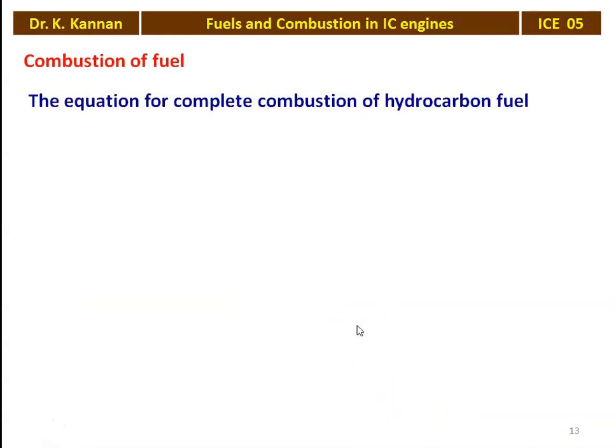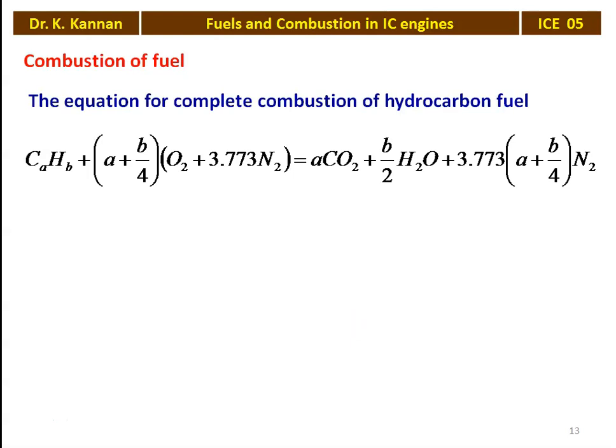The higher calorific value equals the lower calorific value plus the mass of water vapor per kg of fuel multiplied by the latent heat of evaporation at the given pressure and temperature of combustion. The equation for complete combustion of any hydrocarbon fuel CₐHb is: CₐHb + (a + b/4)O₂ + 3.773N₂ = a·CO₂ + (b/2)H₂O + 3.773(a + b/4)N₂. The air contains oxygen and nitrogen; the fuel contains carbon and hydrogen; the products are CO₂, H₂O, and nitrogen. Nitrogen is inert in combustion, but at higher temperatures in diesel engines, nitrogen reacts with oxygen to produce nitric oxide.